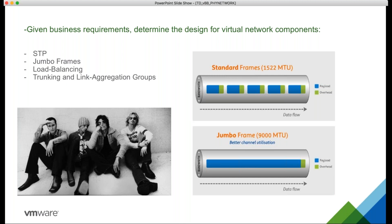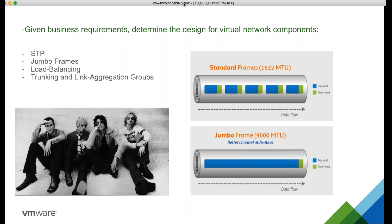Jumbo frames is a big deal with a lot of design decisions around it. One of the biggest use cases is IP storage — jumbo frames isn't necessarily a strict requirement, but for high-performance tuning it's a vendor recommendation. Many switch manufacturers default to 1500 MTU but also offer 9000. Jumbo frames essentially takes your standard 1500-byte MTU and gives you a full 9000-byte frame, so you have a larger payload with a single overhead instead of splitting it up.